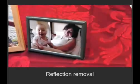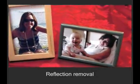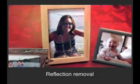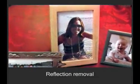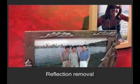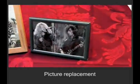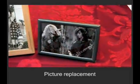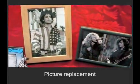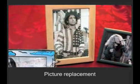In the input video, the pictures contain reflections. These artifacts can be removed by inserting a reflection-free picture in each mask. Conversely, we can preserve the reflections recorded in the original video while replacing the pictures. We've also edited the last picture frame in this example.